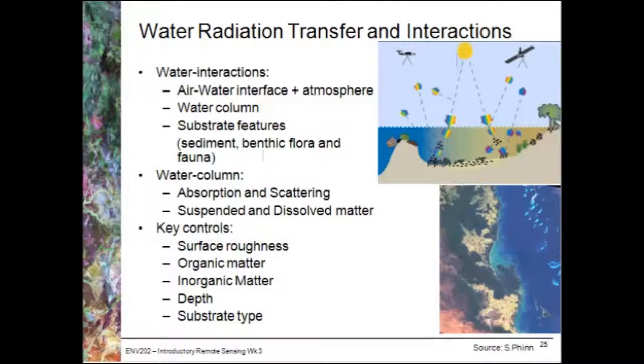Once we pass through the water we also have substrate features, so are we looking at sediment, rock, coral, seagrass, etc. In the actual water column itself we've got a lot of absorption and scattering controlled by suspended and dissolved matter. The key controls within the whole water body are the surface roughness and how that affects specular reflection, any organic and inorganic matter, the water depth and substrate type. These all intermingle together to produce a signal back at the sensor.